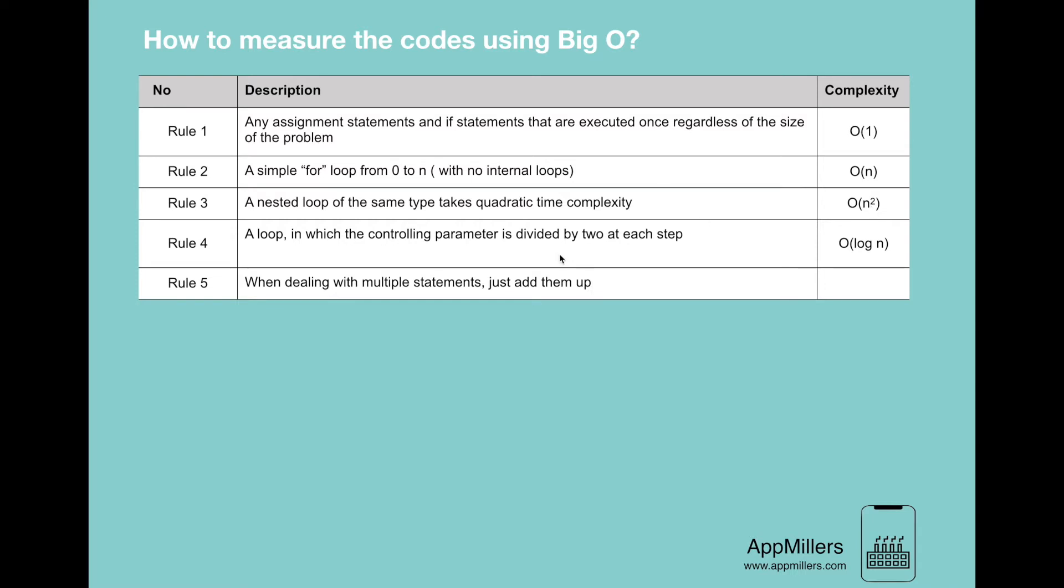And the fourth rule is a loop in which controlling parameter is divided by 2 at each step takes logarithmic time complexity.